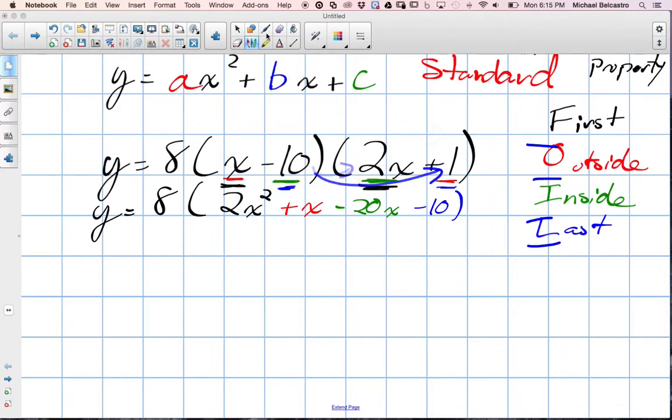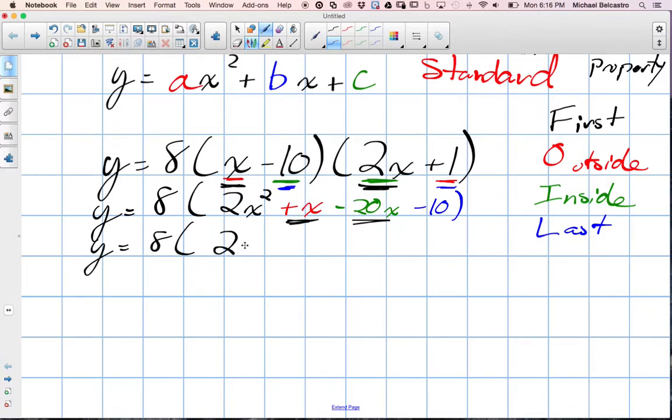The next step would be collect like terms. So I still have my 8 outside. The only two like terms I have are my red and green terms. They both have a variable. If there's nothing there, what do we assume the number is? 1. So it's like positive 1 minus 20. So 2x squared. Positive 1 minus 20, when you put it together, it's negative 19x. And then we have negative 10.